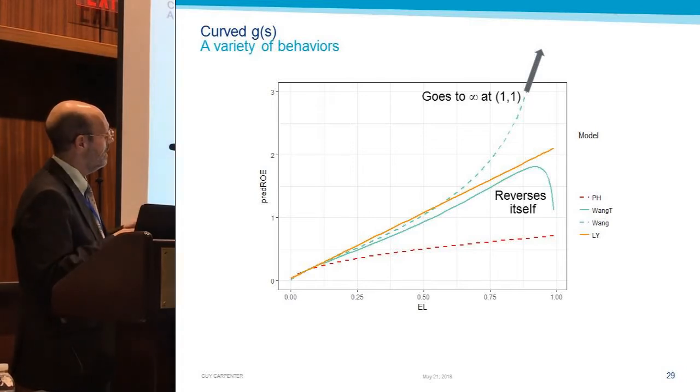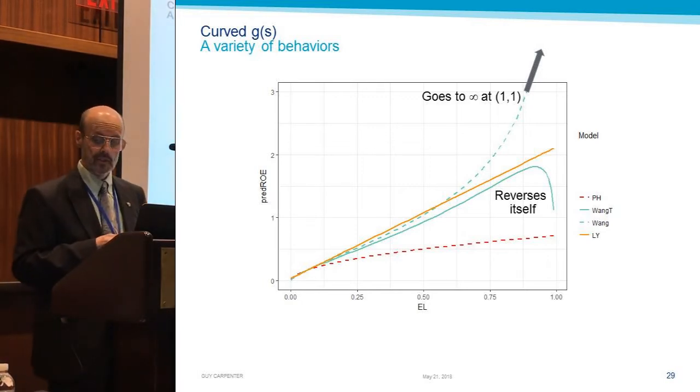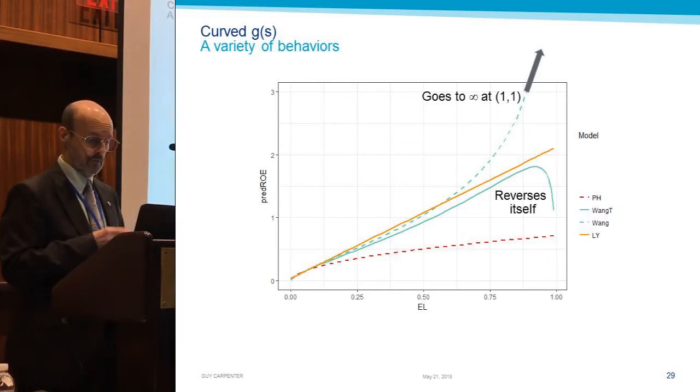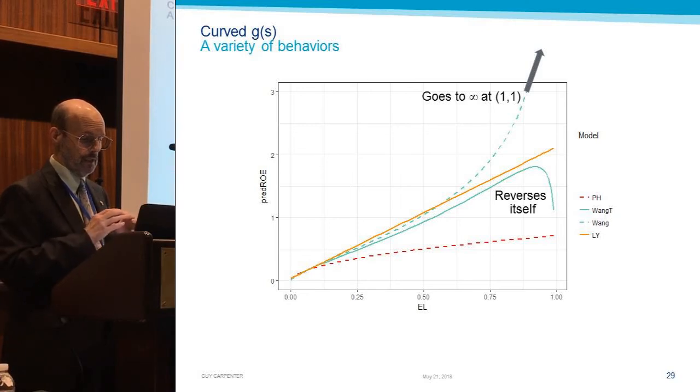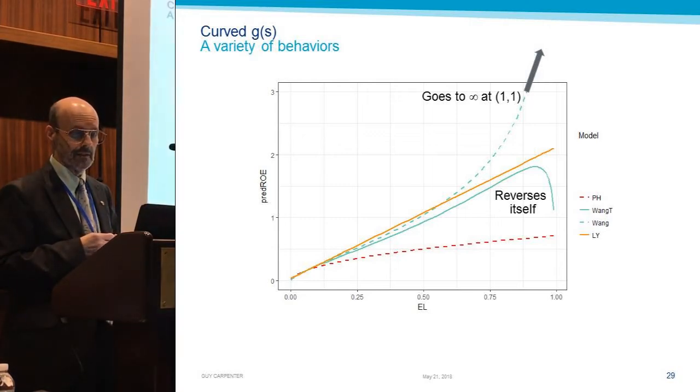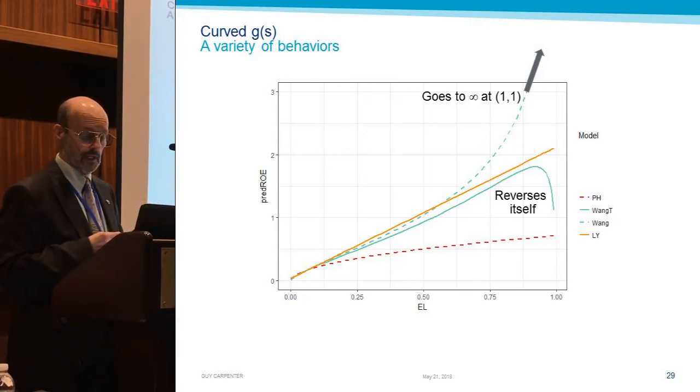The Wang with the outside t-distribution, uh-oh, we got a problem there. It reverses itself. And this is actually because it turns out if you construct your Wang with a normal on the inside and a t on the outside, technically it's not a proper distortion measure because eventually G of S becomes less than S.